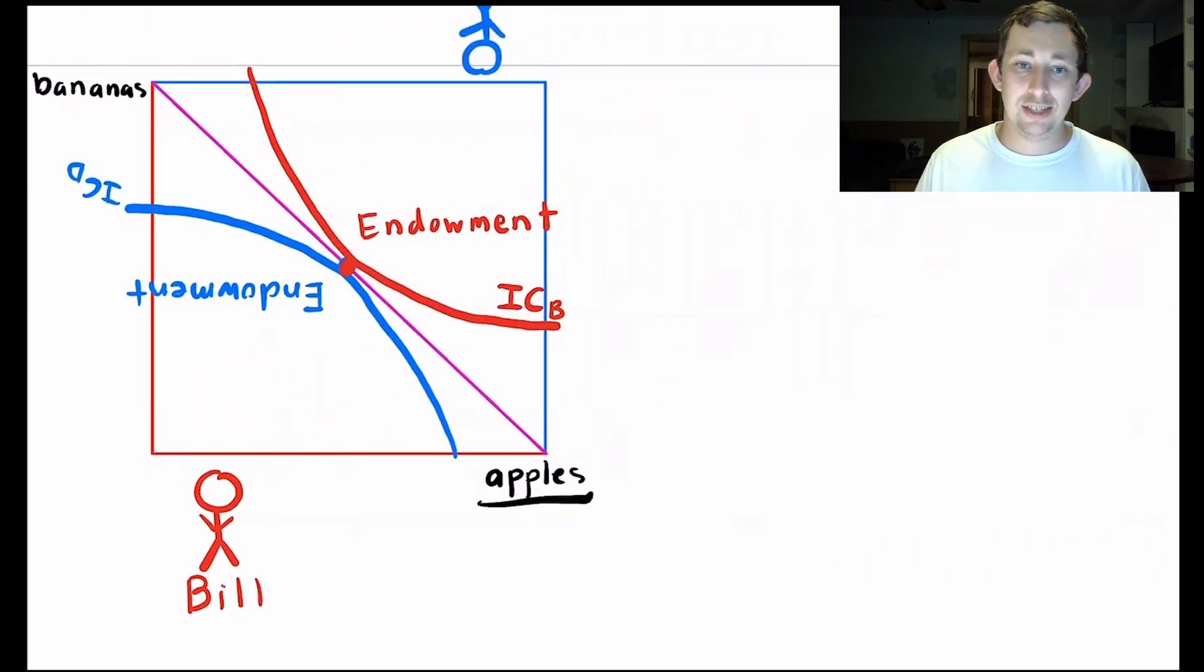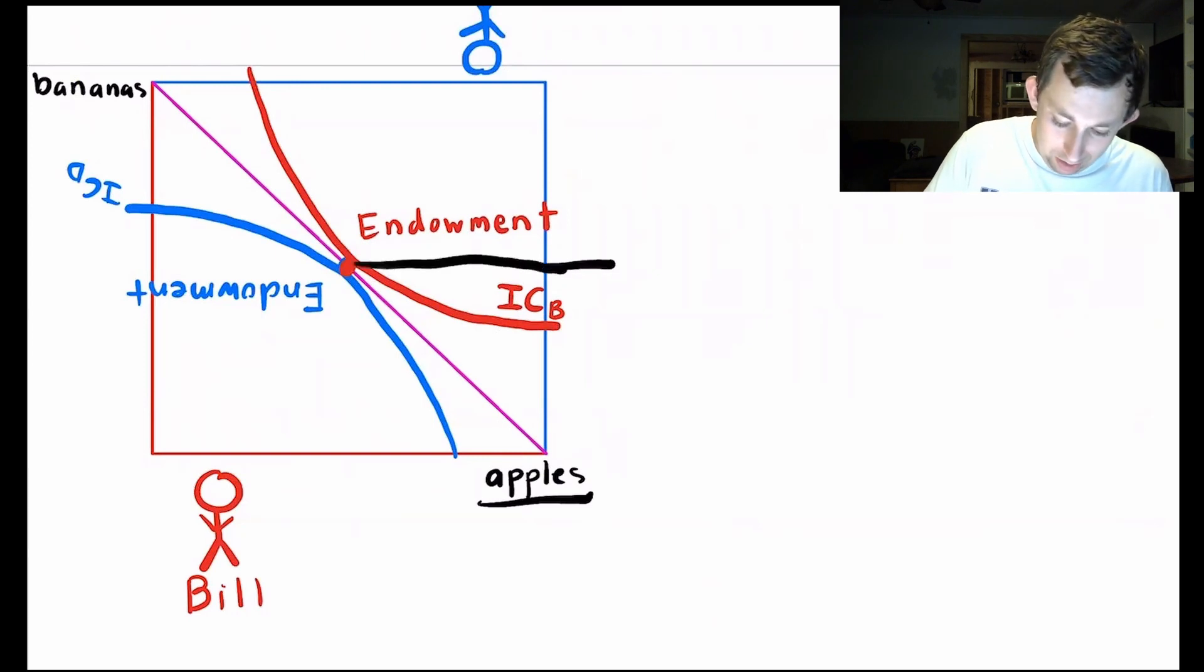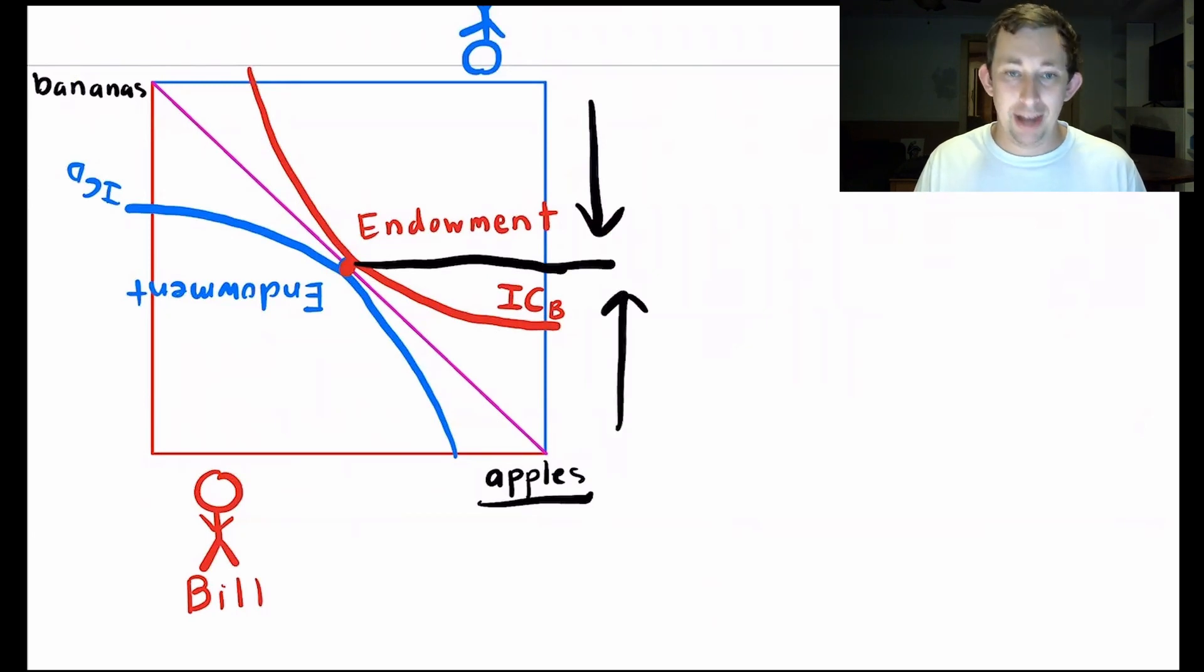And the number of bananas is the number of Bill and Dave's bananas combined. So if I take this point right here, which is over here, notice that going this way is how many bananas Dave has. Going this way is how many bananas Bill has.